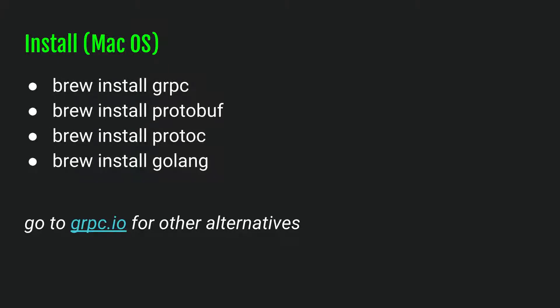To get everything installed — I only know how to install it on a Mac, and luckily if you are on a Mac it's pretty easy: you just brew install all the things. I write the gRPC server in Go, so I also installed Golang. You can write the gRPC server in pretty much any language except PHP, because right now gRPC does not support a PHP gRPC server. However, it looks like Twerp does, so that's something to look into. For other operating systems, you can go to grpc.io to see installation alternatives.